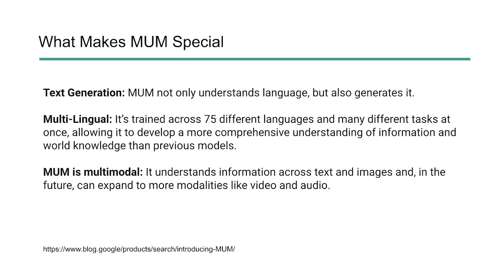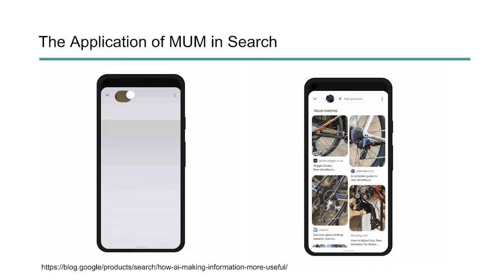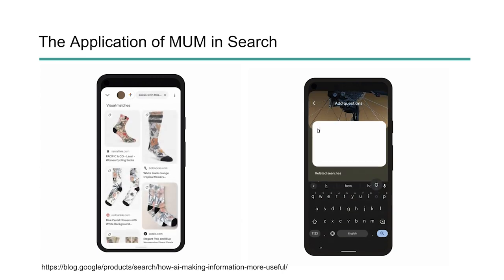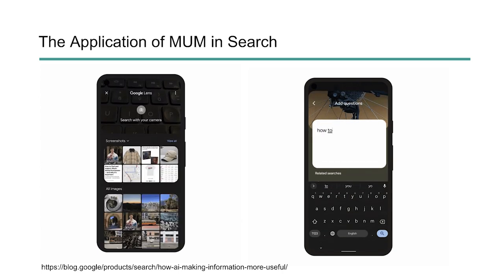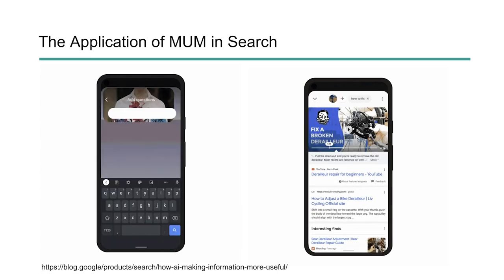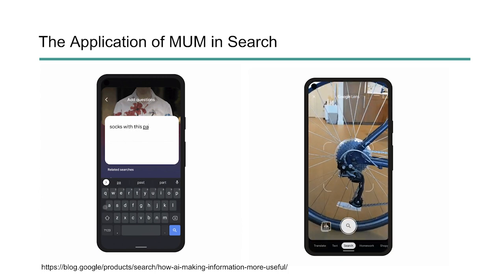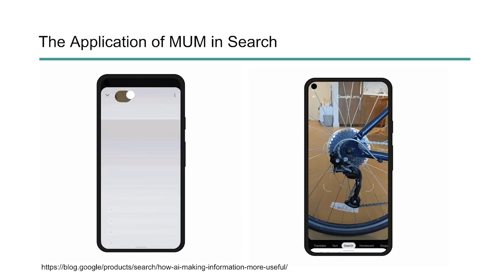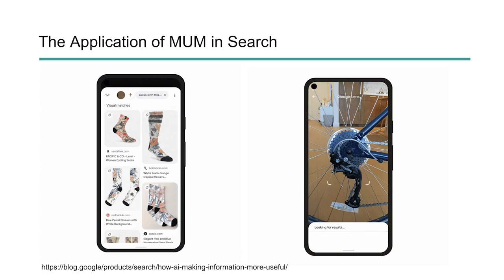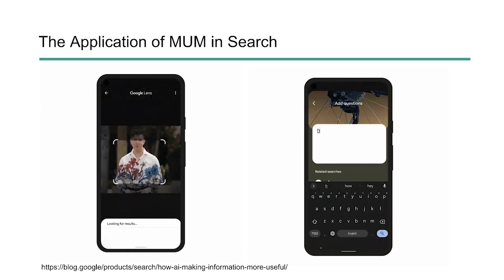Now that MUM is going to be used within Google Search, it's going to allow them to really understand context even further. On this slide, we've got two different applications of MUM within search. From the Google product blog, with Google Lens you can zoom into a shirt — this guy's got a shirt with flowers on it, but say you want socks with that pattern. You can ask 'can you give me socks with that same pattern?' and MUM can identify that floral pattern and try to find socks that match. That's pretty impressive.